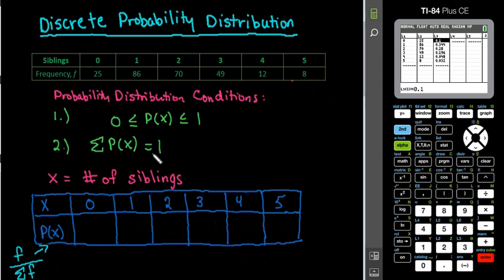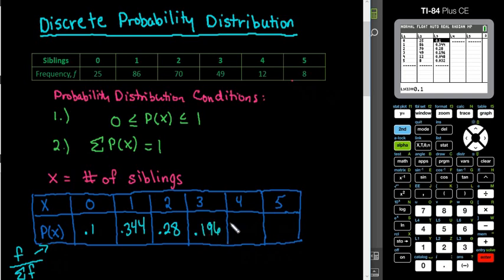So I end up with 0.1 or 10% of the people that were polled had zero siblings, 0.344, 0.28, 0.196, 0.048, 0.032. So I put in all of my probabilities.